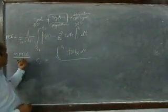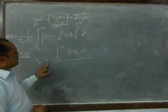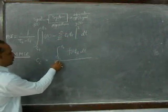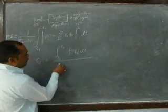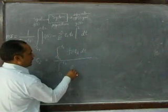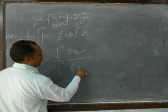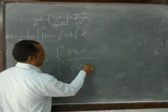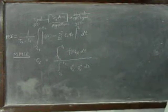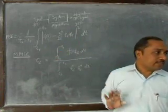In order to minimize the mean squared error, we have to select the CI, and the CI is selected according to this rule: it must be equal to the integral of F(t) times phi_i dt, divided by the integral of phi_i squared, or phi_i and its complex conjugate dt. If we apply this concept, then whatever is the error, that will be minimum in this case.